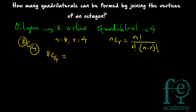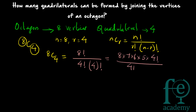So what you will be getting ultimately? Your answer will be 8C4 is equal to 8 factorial divided by 4 factorial into (8 minus 4) factorial, which gives you 4 factorial again. So 8 factorial divided by 4 factorial into 4 factorial. That gives us 8 into 7 into 6 into 5 into 4 factorial, divided by 4 factorial into 4 factorial. The 4 factorials cancel, leaving 8 into 7 into 6 into 5 divided by 4 factorial, which equals 8 into 7 into 6 into 5 divided by 4 into 3 into 2 into 1.